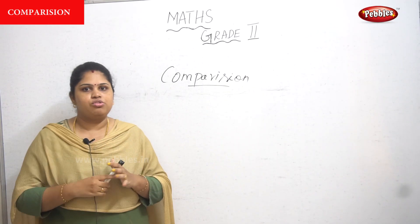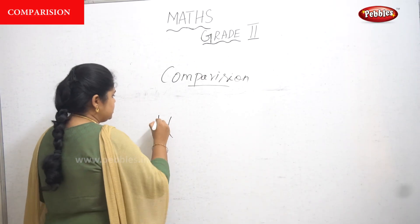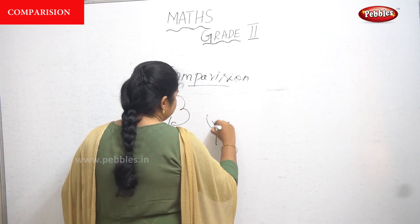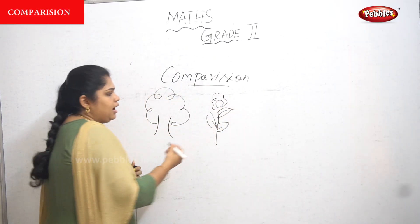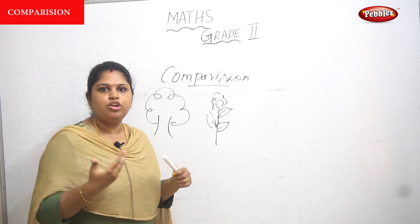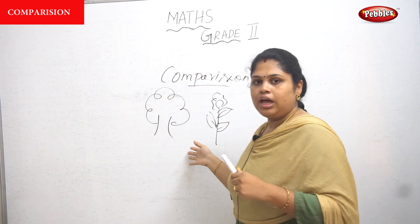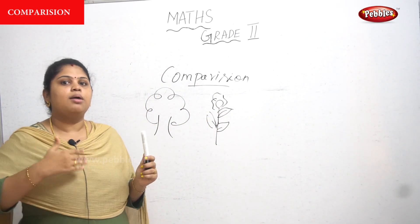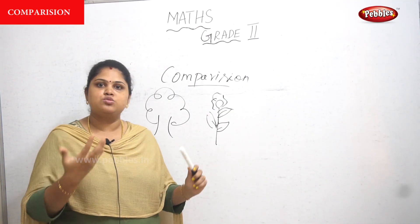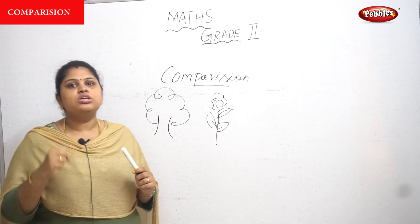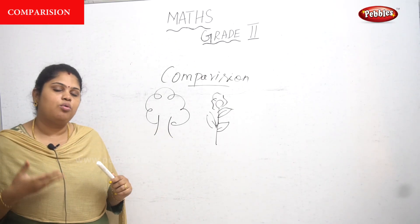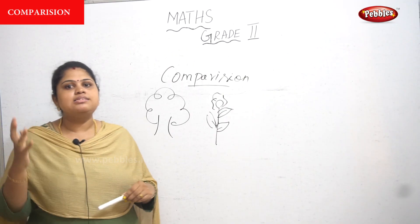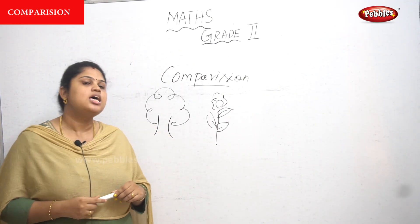For example, when we are comparing which is a bigger — a tree or a plant. I'm just drawing a tree here, and this is a plant. Which is bigger — a tree or a plant? A tree is bigger. When we are comparing, we are saying trees are bigger and plants are smaller. How can we come to the judgment that trees are bigger?